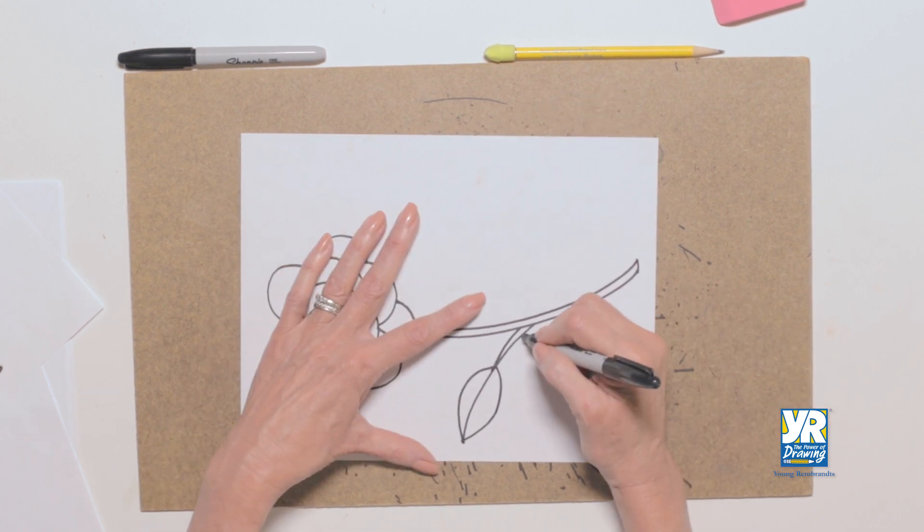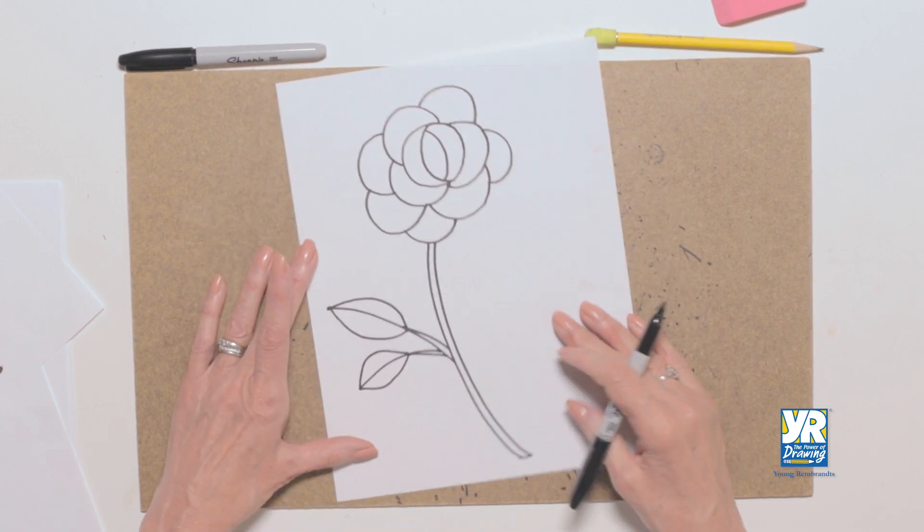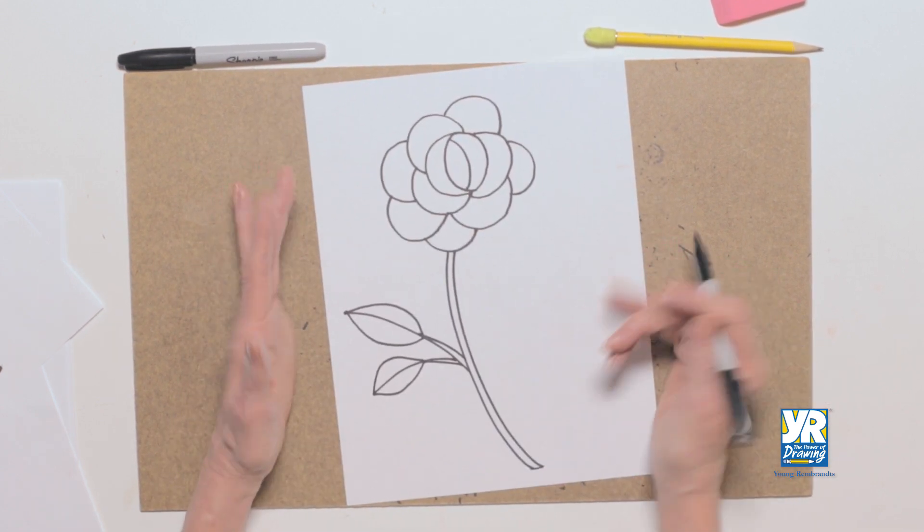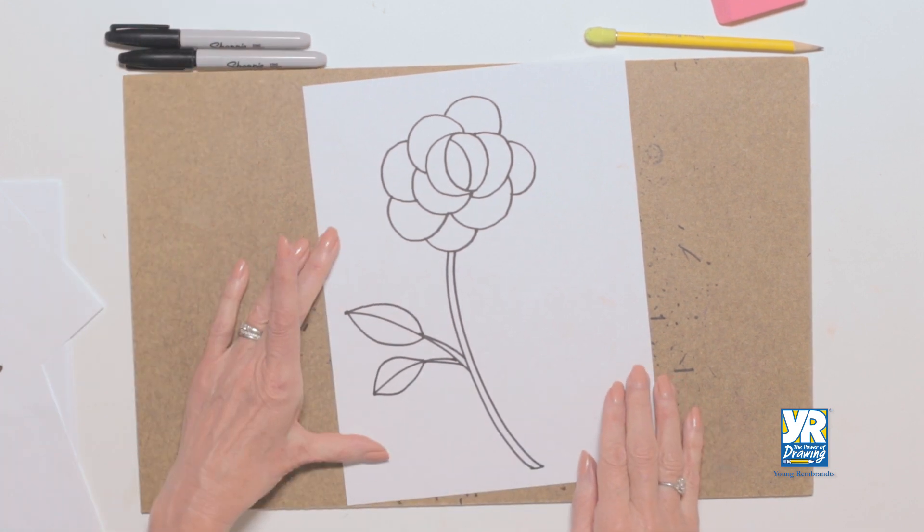And then I have a really short little leaf or stem on this side. There's the base of it. There's the leaf. One side. The other side. So we have our spray rose. But now we're gonna have some fun. We're gonna add some color and some depth to it. Ready?